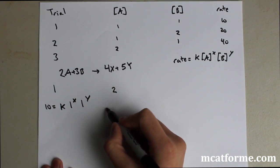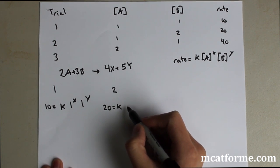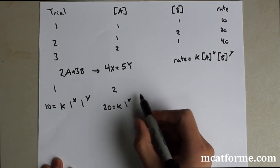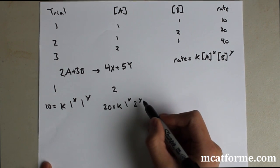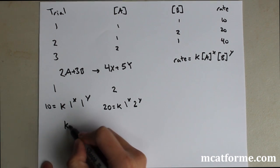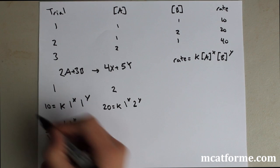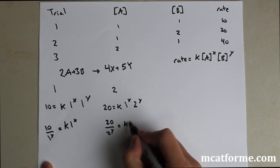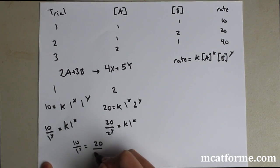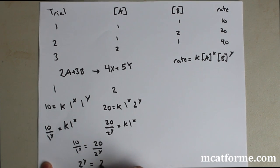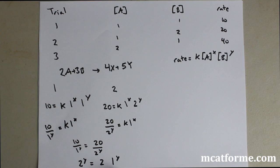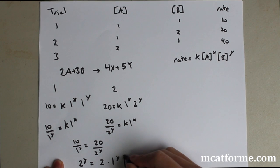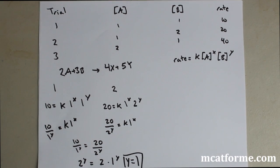In trial 2, we're going to have 20 equals K, and then A is going to be 1 to the X, and then B is going to be 2 to the Y. We're going to manipulate this in a very simple way. We're just going to move this to the other side. It'll be 20 over 2Y equals K1X. We're going to make these equal to each other and manipulate it around a little bit. We're going to see that Y is going to have to equal 1. If you plug in any number into this, 2 to the Y equals 2 times 1 to the Y, Y has to equal 1. So we know that Y is 1. We need to solve for X and Y, and now we have solved for Y.